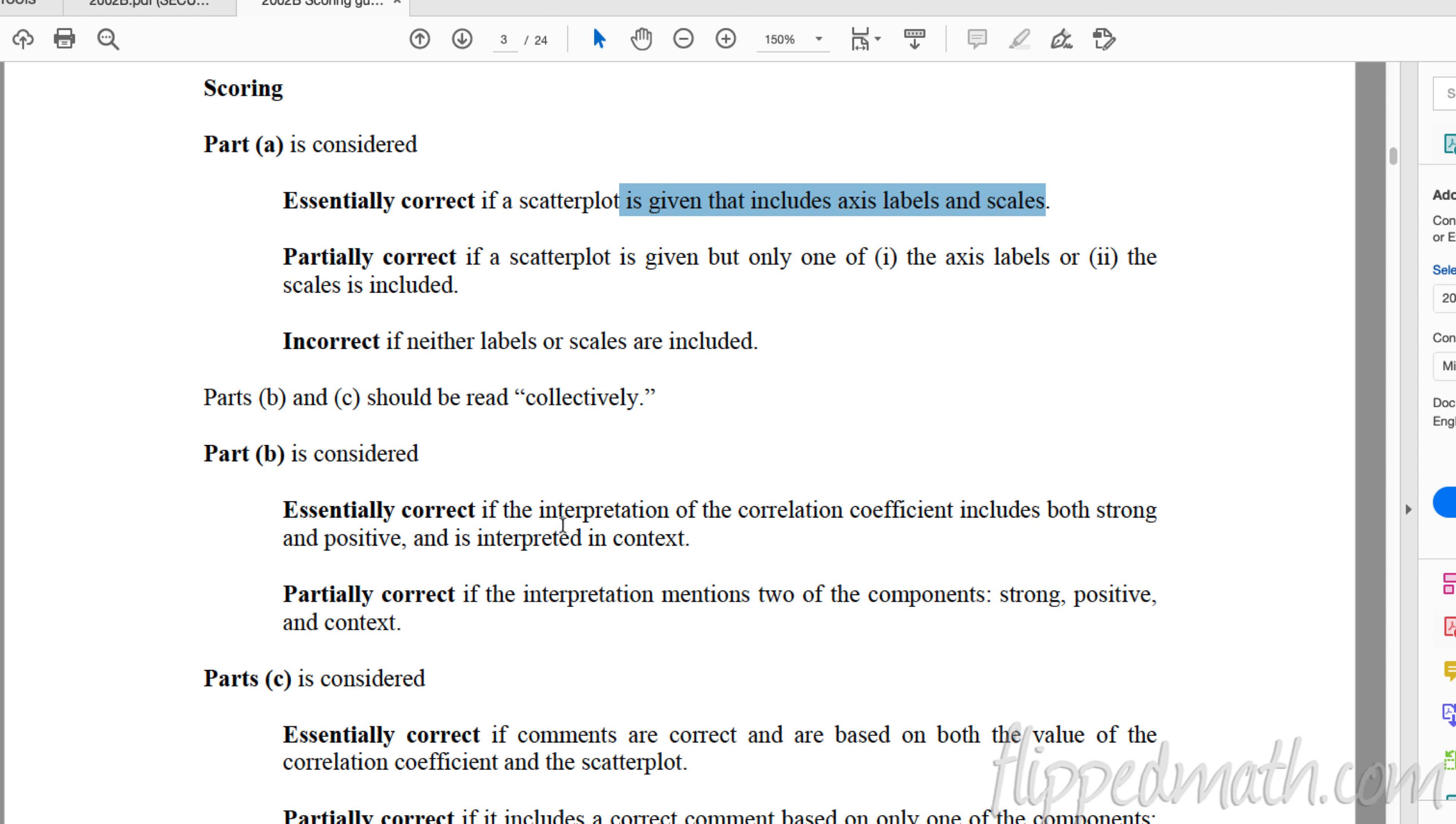Then off to each part. So part B says the value for the correlation coefficient is 0.85. Interpret this value. So interpret 0.85 without even looking at this problem. What does 0.85 even mean? That's what this question is asking. So again, according to the solution guide, 0.85 means there's a strong positive linear relationship between swine population size and atmospheric ammonia.